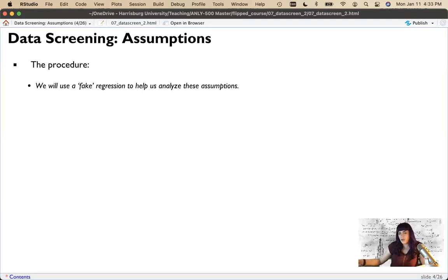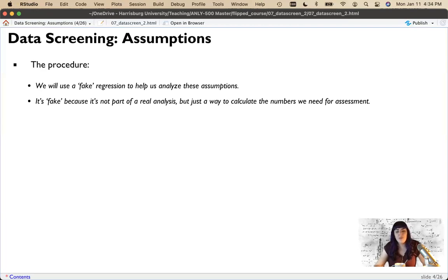In this procedure, what we'll do to check for some of these is we'll use a fake regression. Now this regression is fake because it allows us to view the numbers that we're interested in, and it's fake in the sense that it's not a real statistical test. So we don't look at the output from the regression itself and use it to answer any questions. We're just using that mathematically to get us to the numbers we need to check for these assumptions. It's not a real analysis, just a way to get the numbers we're interested in. This procedure is in the Tabachnick and Fidell monster multivariate book. So I'll give you the short and sweet version here.